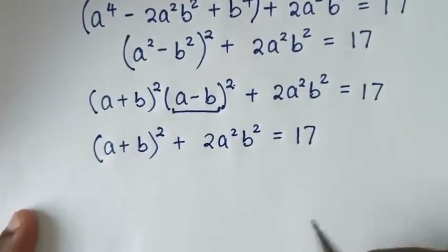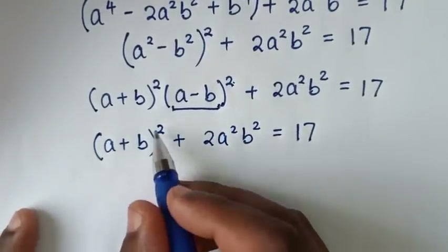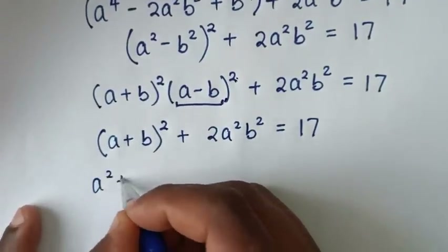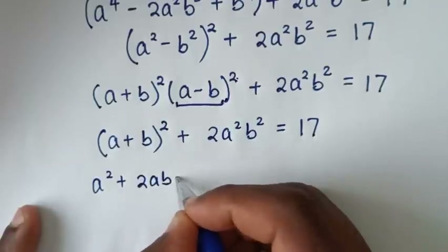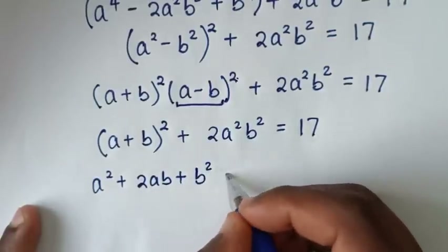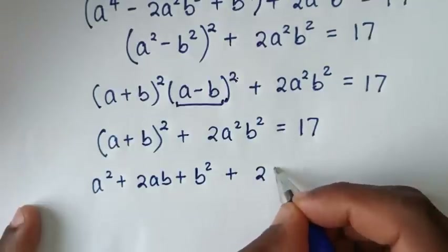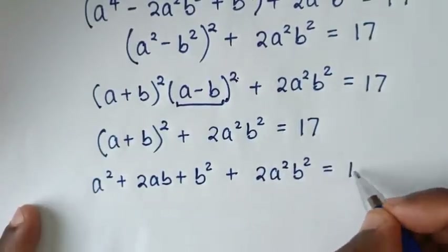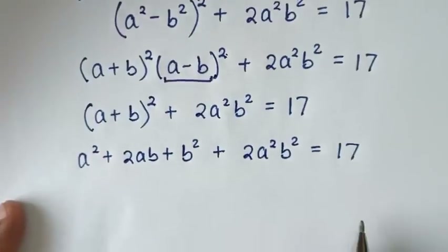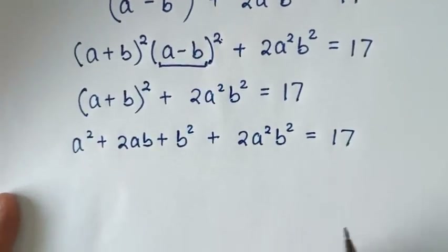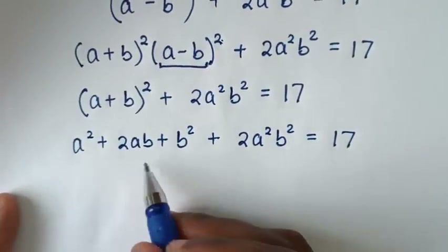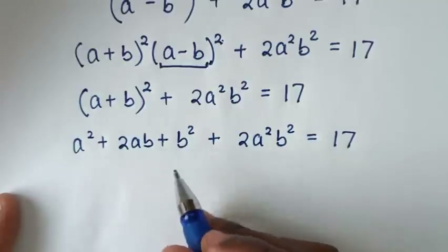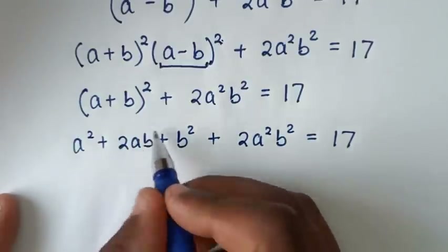Then in the next step, we expand (a+b)², which is a² + 2ab + b², then plus 2a²b² equals 17. Then in the next step, we make this again in the form of a perfect square. So to do this, here we have 2ab.